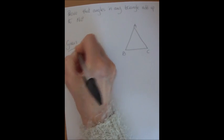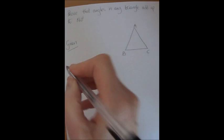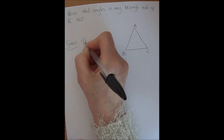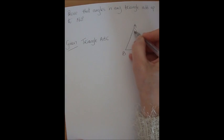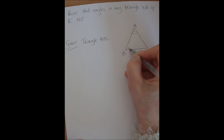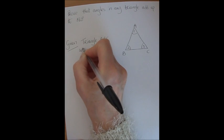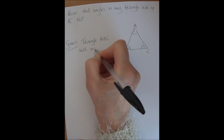Now beside it I'm writing down what I'm given. So I'm given triangle ABC and I'm going to label the angles, number them just to make things easy, with angles 1, 2 and 3.